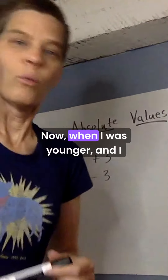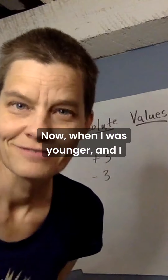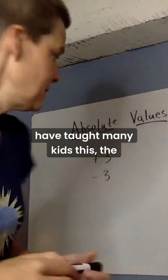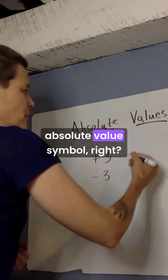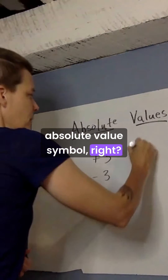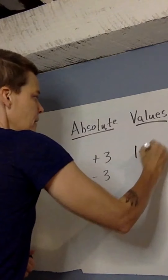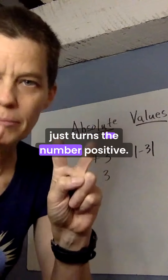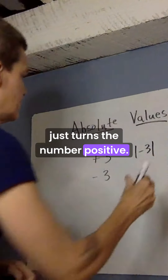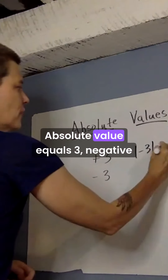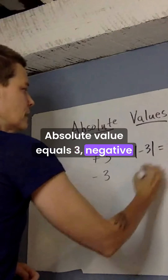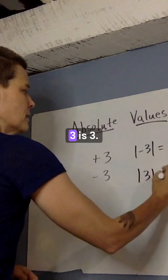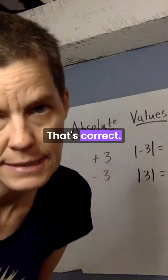Now, when I was younger, and I have taught many kids this — the absolute value symbol just turns the number positive. Absolute value of negative three equals three; absolute value of three is three. That's correct.